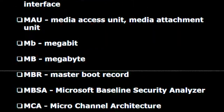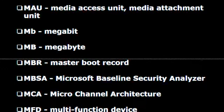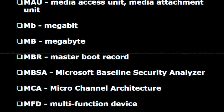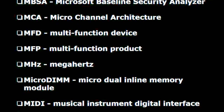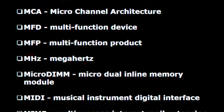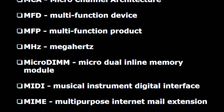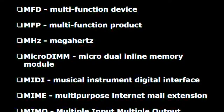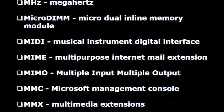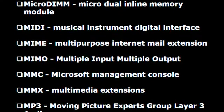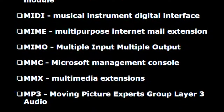M.B. — Megabit. M.B. — Megabyte. M.B.R. — Master boot record. M.B.S.A. — Microsoft baseline security analyzer. M.C.A. — Micro channel architecture. M.F.D. — Multifunction device. M.F.P. — Multifunction product. M.H.Z. — Megahertz. Micro DIMM — Micro dual inline memory module. M.I.D.I. — Musical instrument digital interface. M.I.M.E. — Multipurpose internet mail extension. M.I.M.O. — Multiple input multiple output.